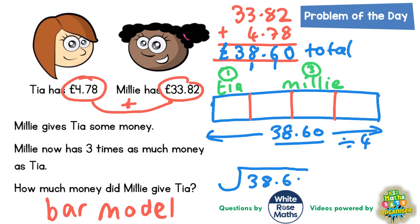We use the bus shelter method to divide by four, which will tell us what each section is worth. Fours into 3 won't go, so we carry the 3 to make 38. Fours into 38: nine fours are 36 with 2 left over, making 26. Fours into 26: six fours are 24 with 2 left over, carry the 2. Fours into 20 goes five times. Put the decimal point in and that's £9.65 — so each of the four sections is worth £9.65.